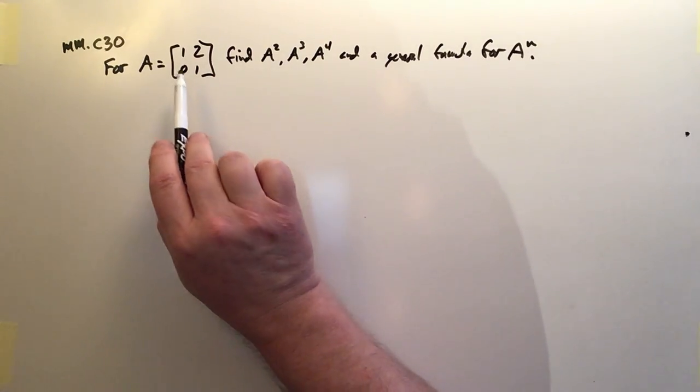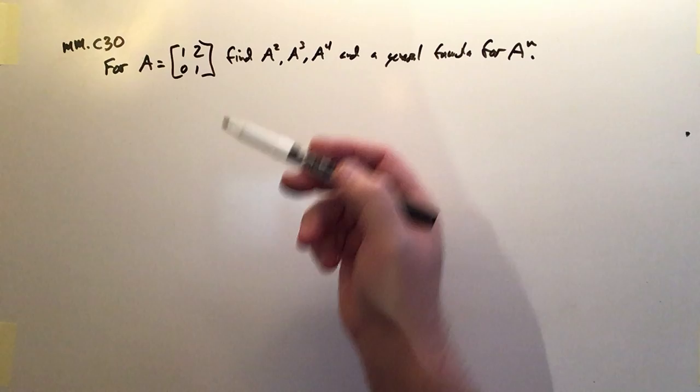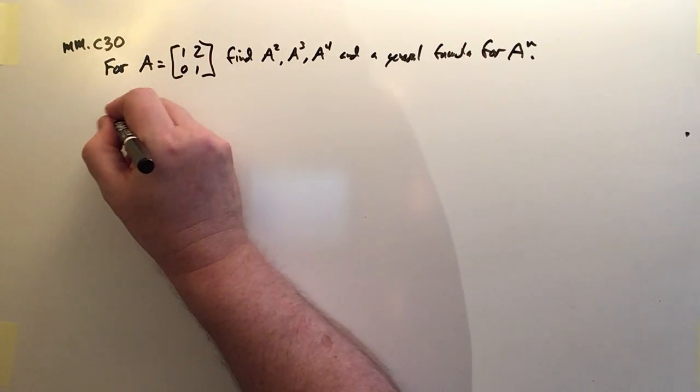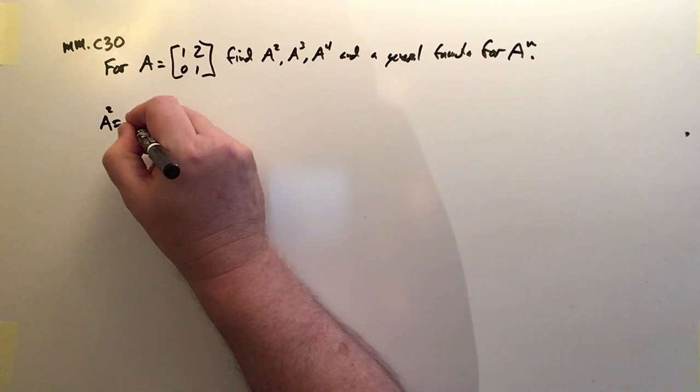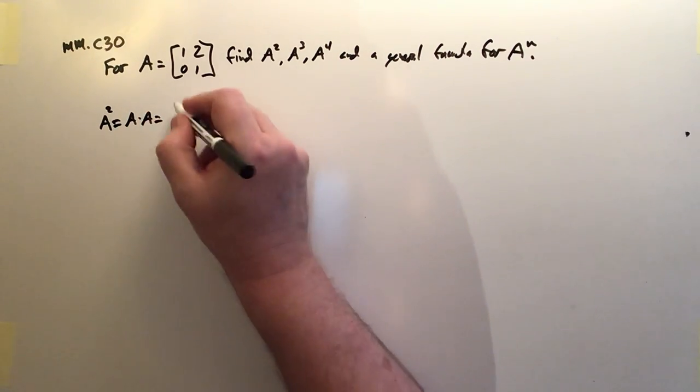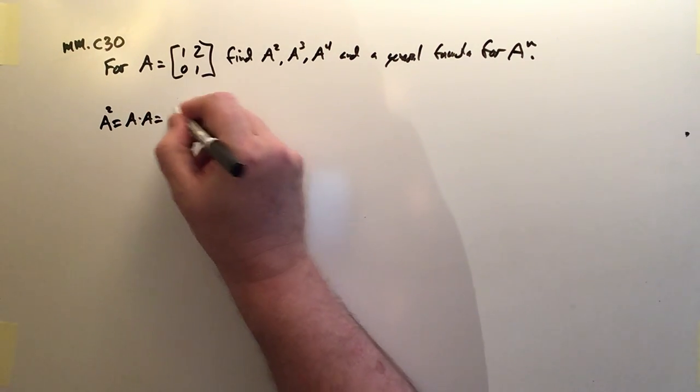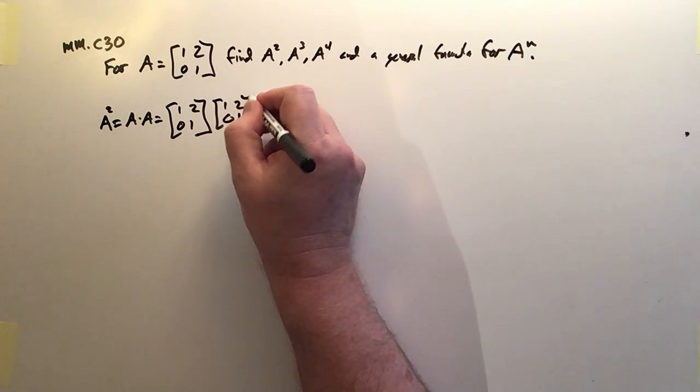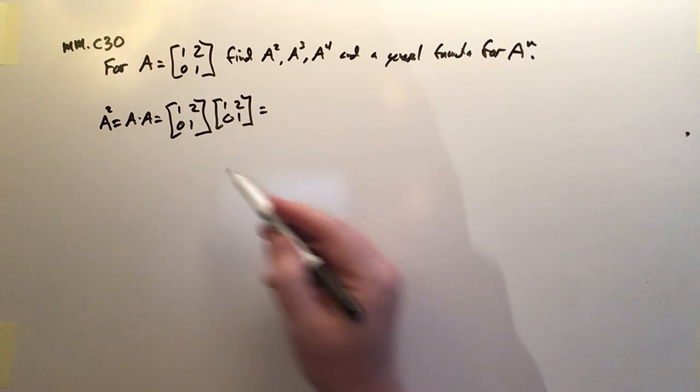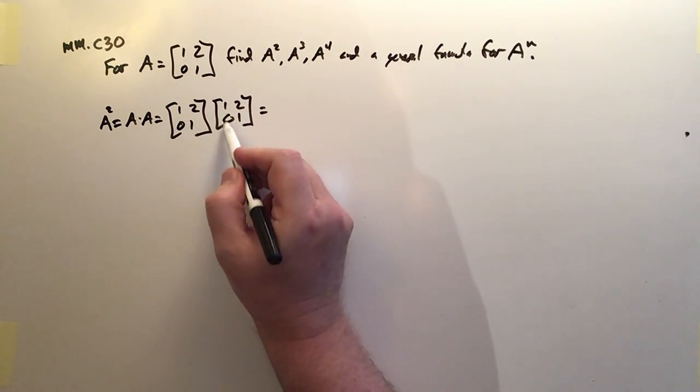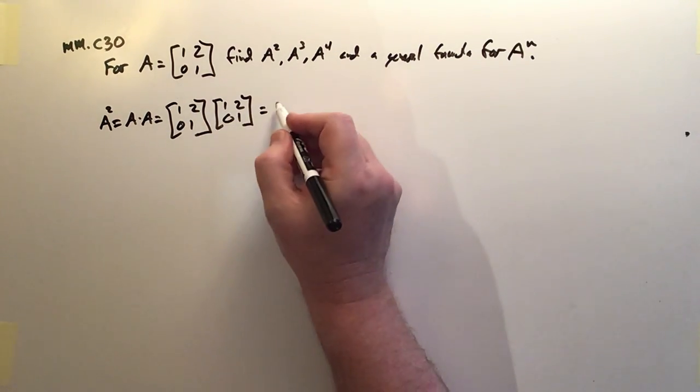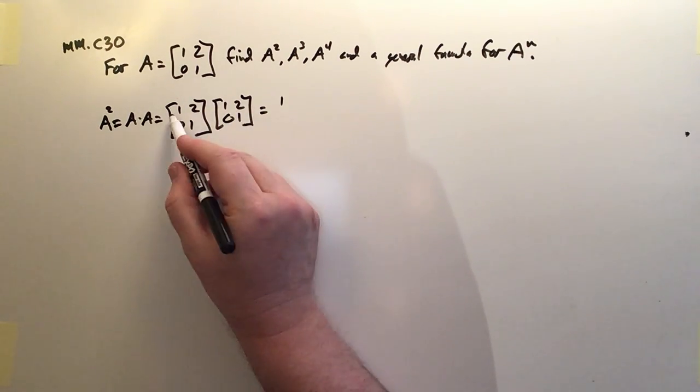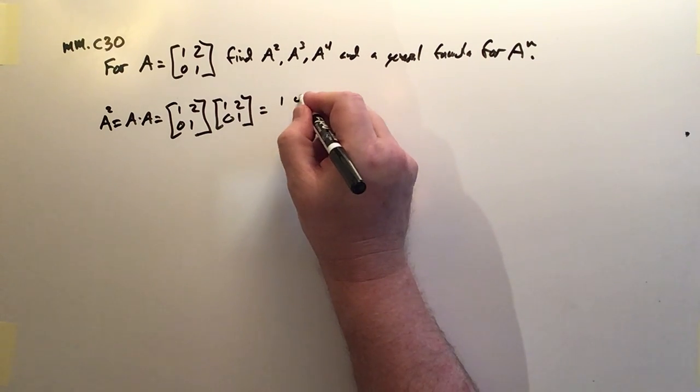So if we had to take this guy and multiply by itself 12 times, what would the end result be? Well, here's what it looks like. First of all, A squared is going to be equal to A times A, and that's of course going to be 1, 2, 0, 1 times 1, 2, 0, 1. And this is not too hard a product. 1, 2 times 0, 1 produces 1 plus 0, and that's the upper left-hand corner.